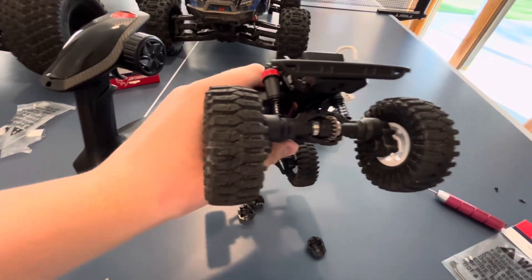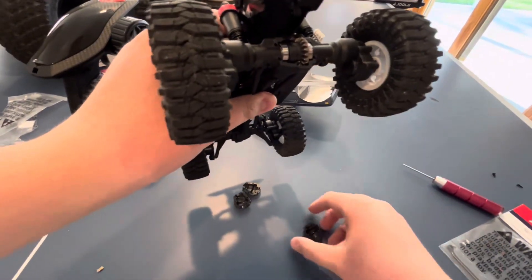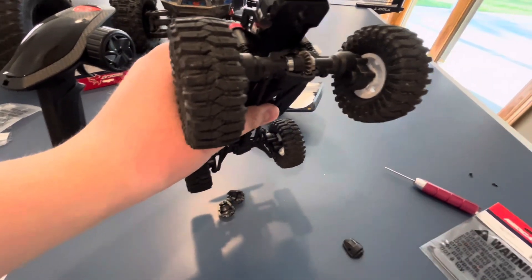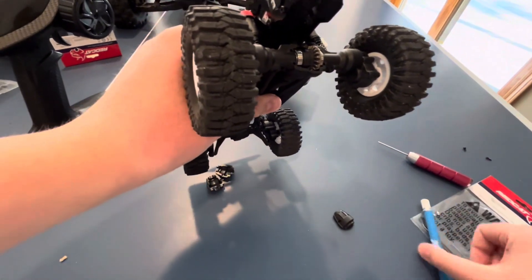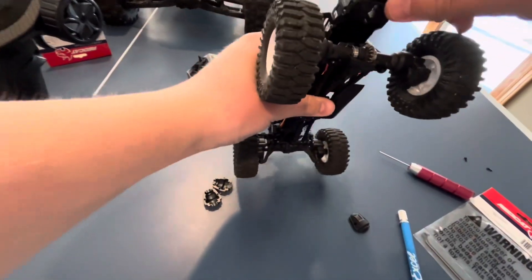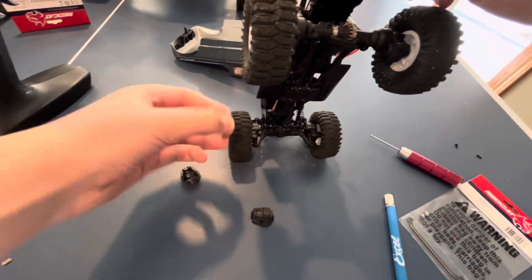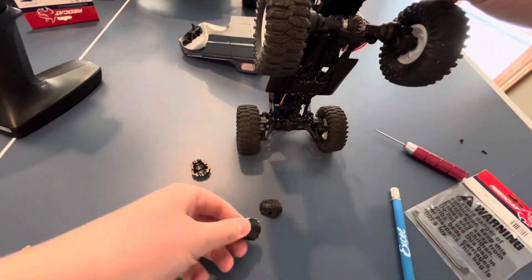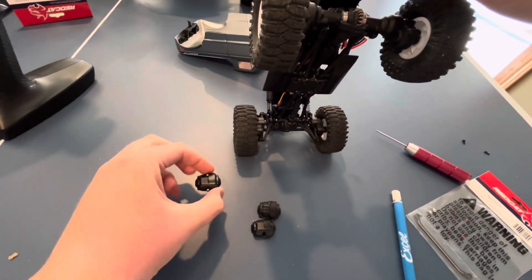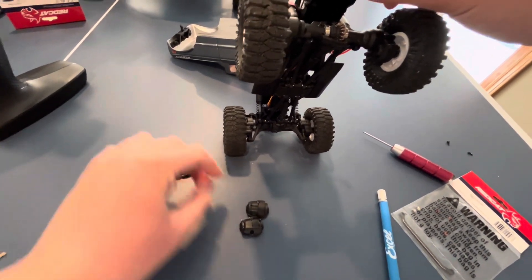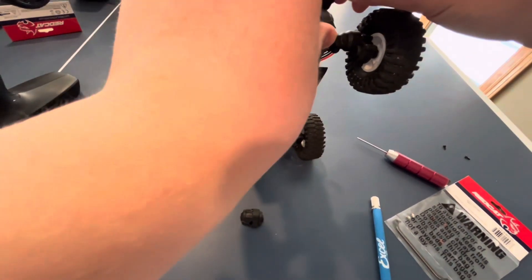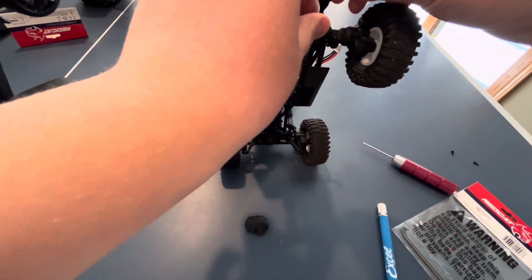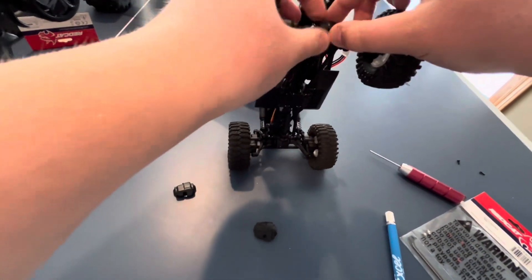And now we just gotta get it off. Alright, so to get the diff case off, I just kinda had to pry it off, the little plastic piece with my Xacto, but let's go ahead and match it up. Oh, I think it's the same, but... Alright. Let's get the brass on there. Nice.